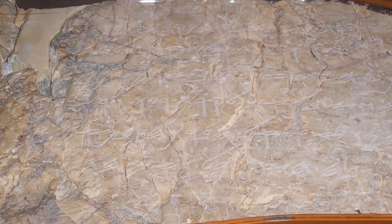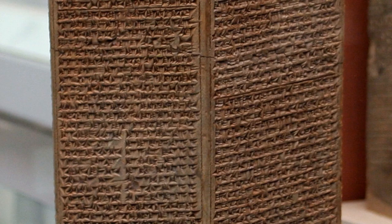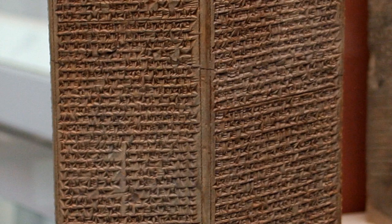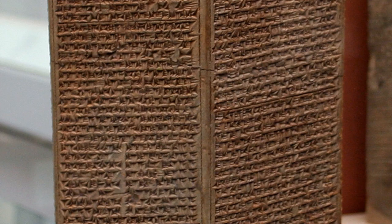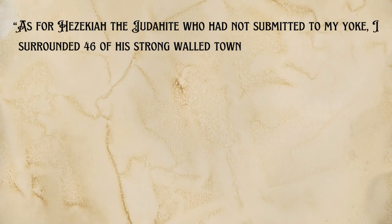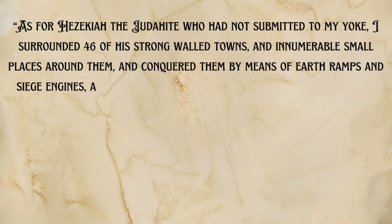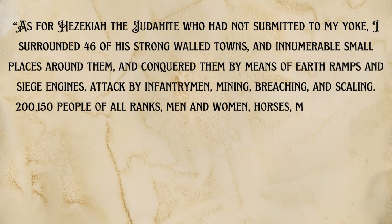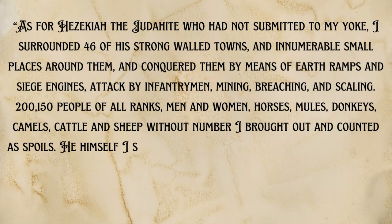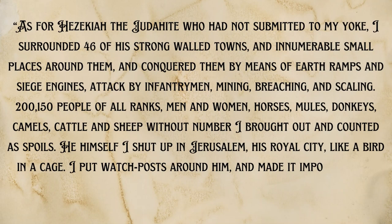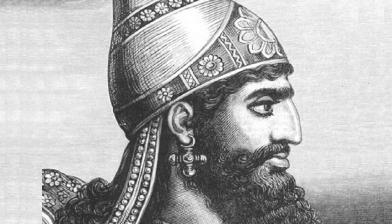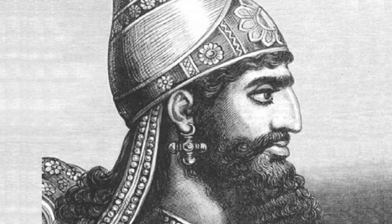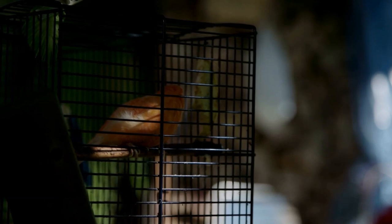More fascinating still, there are several copies of the Annals of Sennacherib which have been discovered. Three clay prisms describing events from Sennacherib's reign contain the same text, including his boast: 'As for Hezekiah the Judahite, who had not submitted to my yoke, I surrounded 46 of his strong-walled towns and innumerable small places around them, and conquered them by means of earth ramps and siege engines, attacked by infantrymen, mining, breaching, and scaling. Over 200,000 people of all ranks, men and women, horses, mules, donkeys, camels, cattle, and sheep without number, I brought out and counted as spoils. He himself I shut up in Jerusalem, his royal city, like a bird in a cage. I put watchposts around him and made it impossible for anyone to go out of his city.' Sennacherib also says his lordly splendor overwhelmed Hezekiah, confirming that Hezekiah did indeed pay him tribute. Notably, Sennacherib doesn't brag about destroying Jerusalem, but rather shutting up Hezekiah like a bird in a cage — consistent with the biblical description of God's rescue of his people and Sennacherib's return to Assyria without conquering Jerusalem.